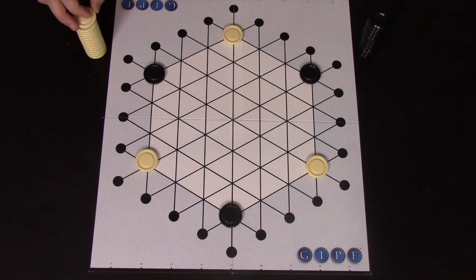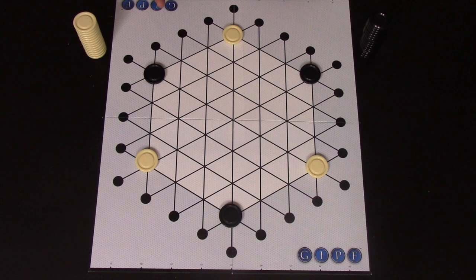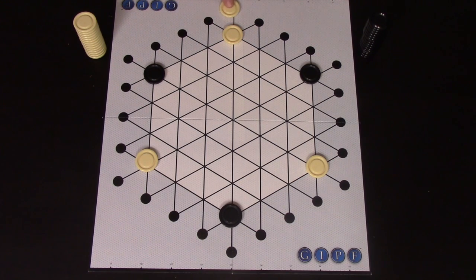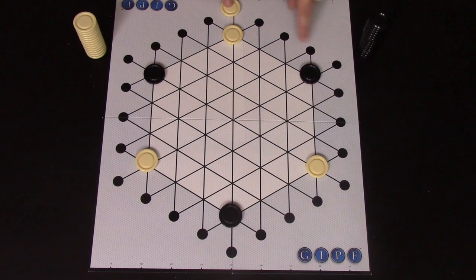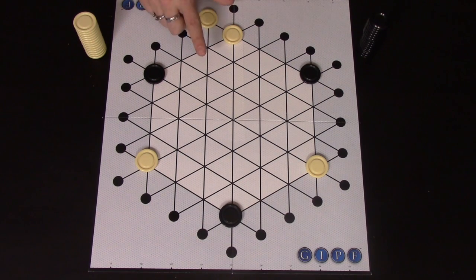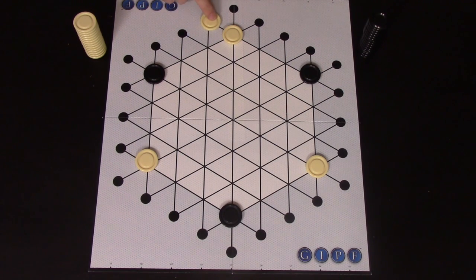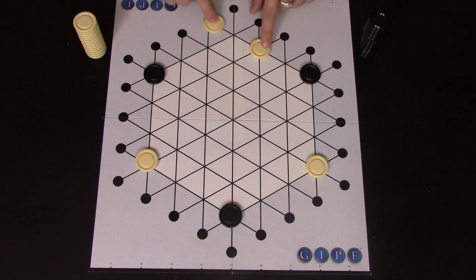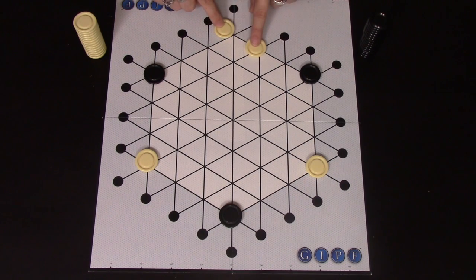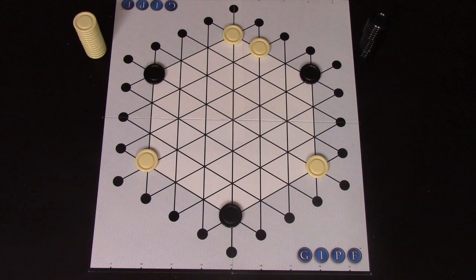On your turn in GIF, saying white goes first, you're going to add one piece to the board in the following way. You're going to place your piece on one of these black circles around the edge of the board and you're going to effectively push that piece onto the board. So on white's turn, white could do that and move effectively, pushing it on that way, move every piece in front of it down one.